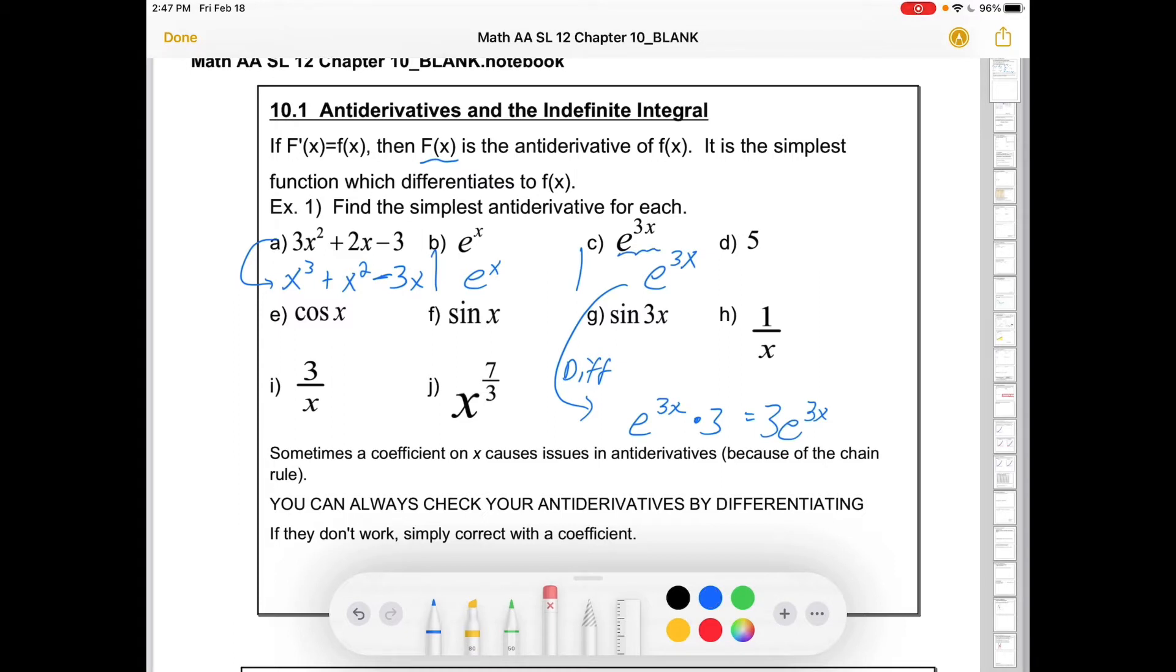But getting that wrong answer actually helps me. I know that when I do it without anything out front, I'm getting something that's 3 times too big. So I'll just put a 1 third in front. And now I can check. If I differentiated that, I'd get 1 third times e to the 3x times, from the chain rule, a 3. Oh my gosh, it would get me back where I started.